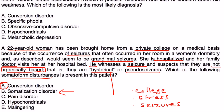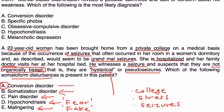I encourage you to look at each of these in the explanation section to see how they differ from conversion disorder. For example, hypochondriasis involves a very strong fear of having a disease, and malingering is when the patient is faking their symptoms — neither fits these vignettes best. For this question, the answer is A.